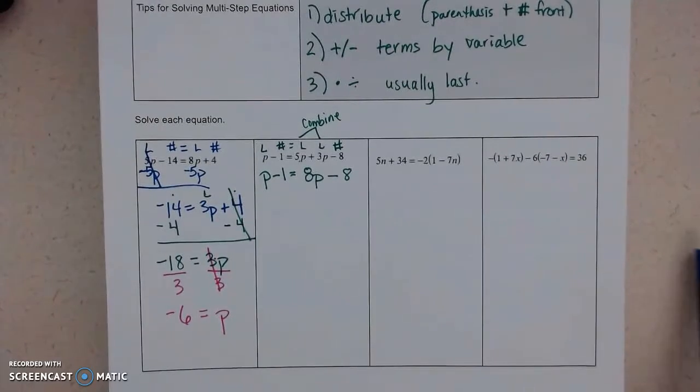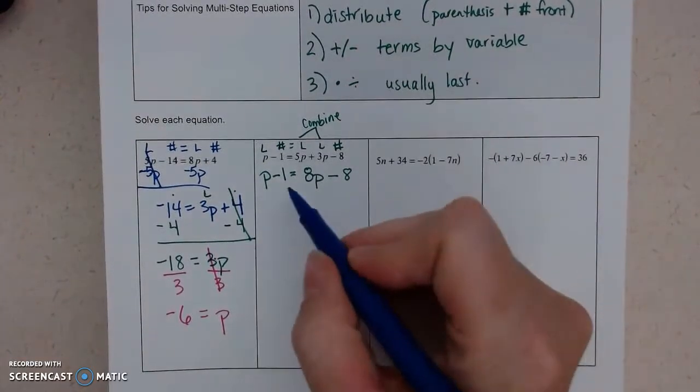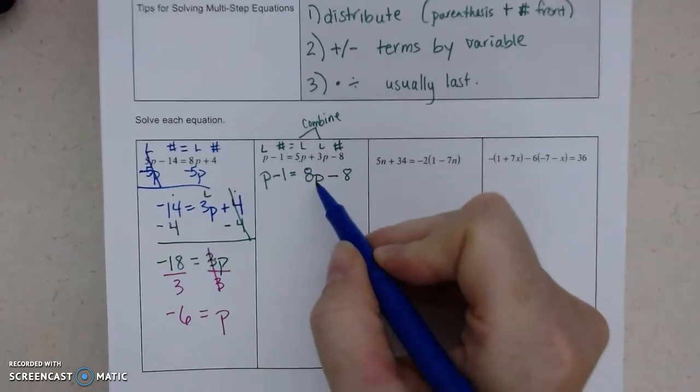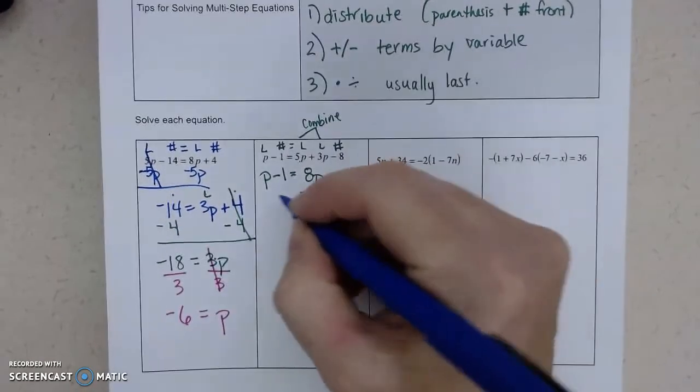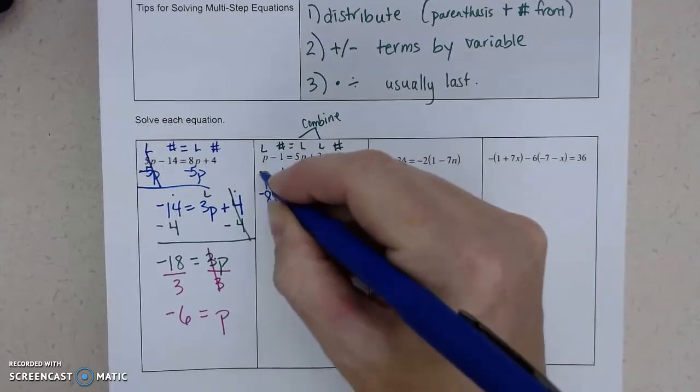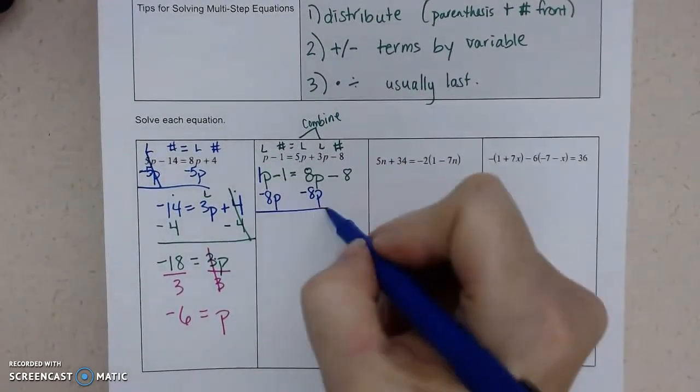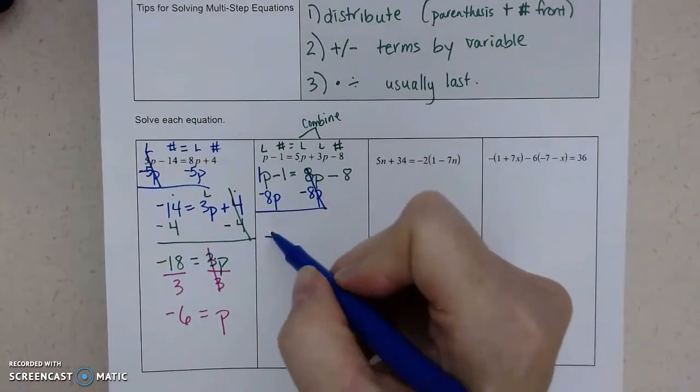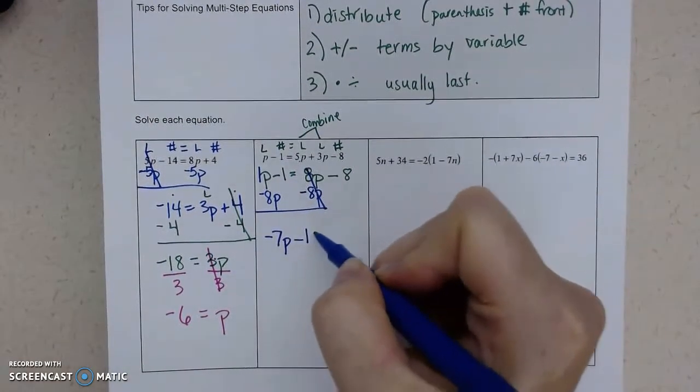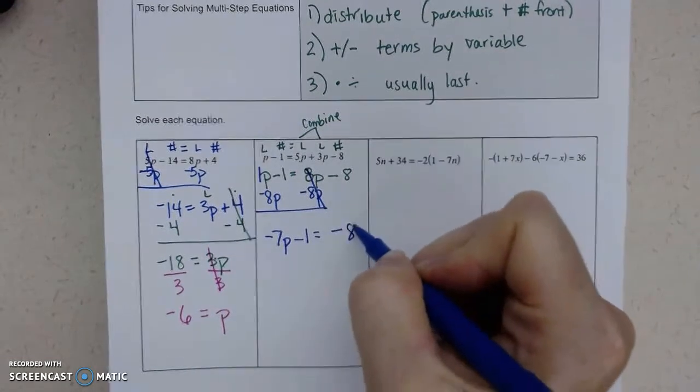So same thing, you pick if you want the letters to the left or the right. I'll go ahead and let's move them to the left this time. So I'm going to move the 8P by subtracting it. And there's really an imaginary 1 up there. So 8 minus 8 does cancel. 1 minus 8 is negative 7. And we'll bring all the other terms down. Don't forget that's a negative 8.